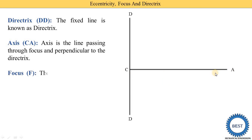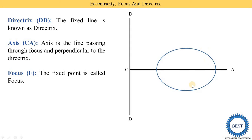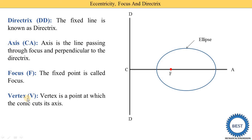Third definition: focus. Focus is denoted as F. Focus is defined as the fixed point. This fixed point is called the focus and it is the internal point of any conic section — it is the internal point of the ellipse, the parabola, and the hyperbola. Suppose this is the ellipse and one fixed point F — that is called the focus.